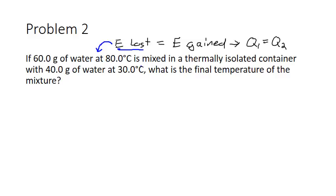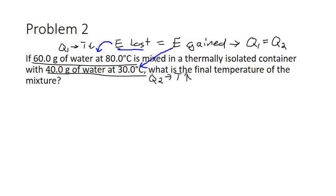The 40 grams of water at 30 degrees Celsius is going to gain energy from the hotter water. One set loses, the other gains — call them q1 and q2. The key is that the amount of energy lost equals the amount of energy gained. We take advantage of that to solve the problem. We're still using q = mcΔT, just set up a little differently.